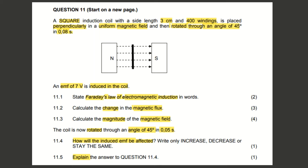The first question asks us to state Faraday's law of electromagnetism. The second question wants us to calculate the change in magnetic flux. The third question asks us to determine the magnitude of the magnetic field. The question then states that the coil is rotated 45 degrees but now in 0.05 seconds, and asks how the induced EMF will be affected — will it increase, decrease, or stay the same — and to explain our answer.